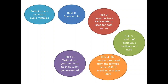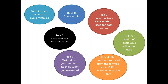Then add the mesiodistal width of the incisors according to the arch. Rule 5 — write down your numbers and show what you measured. I don't need the final number only; I need to know how you got it. Show the formula, how you applied it, multiplied by 2, all the numbers, all the steps. Finally, remember that all measurements are made in millimeters.